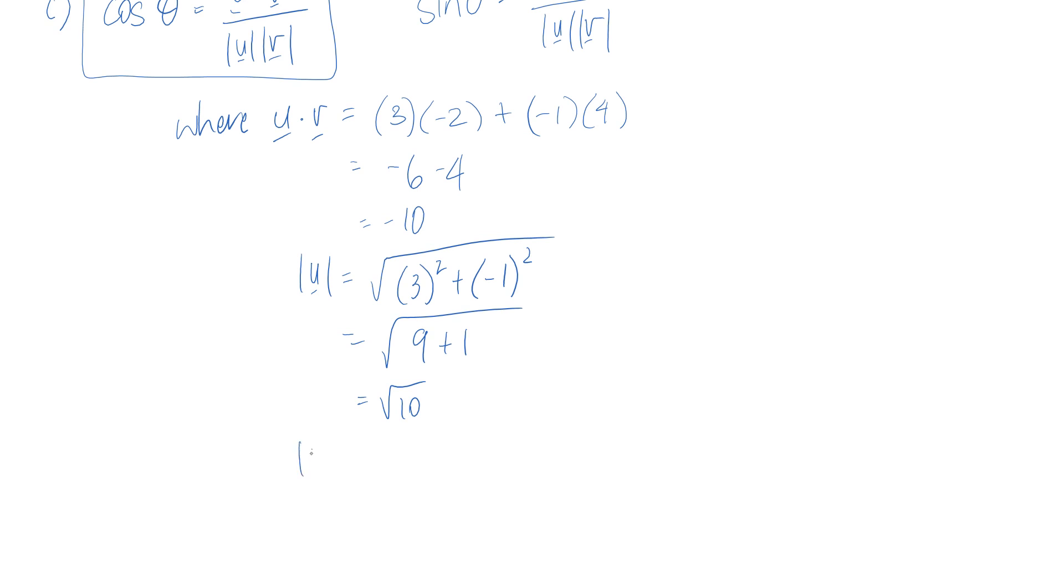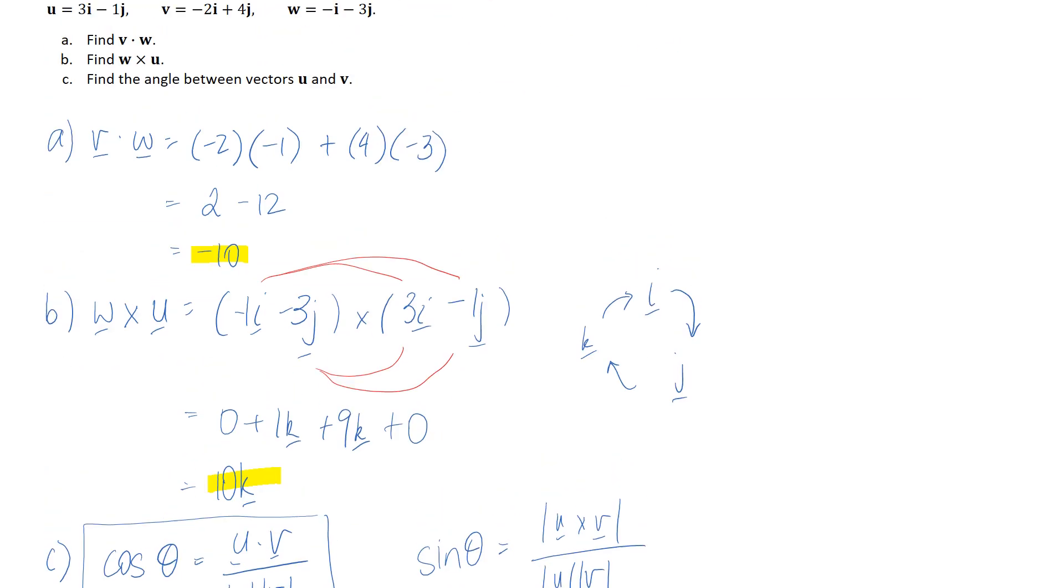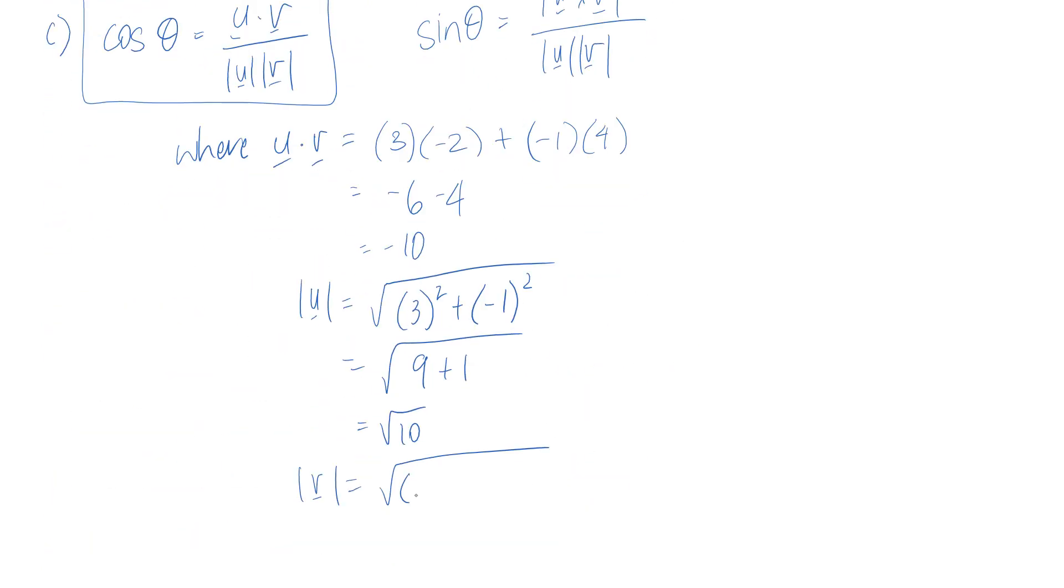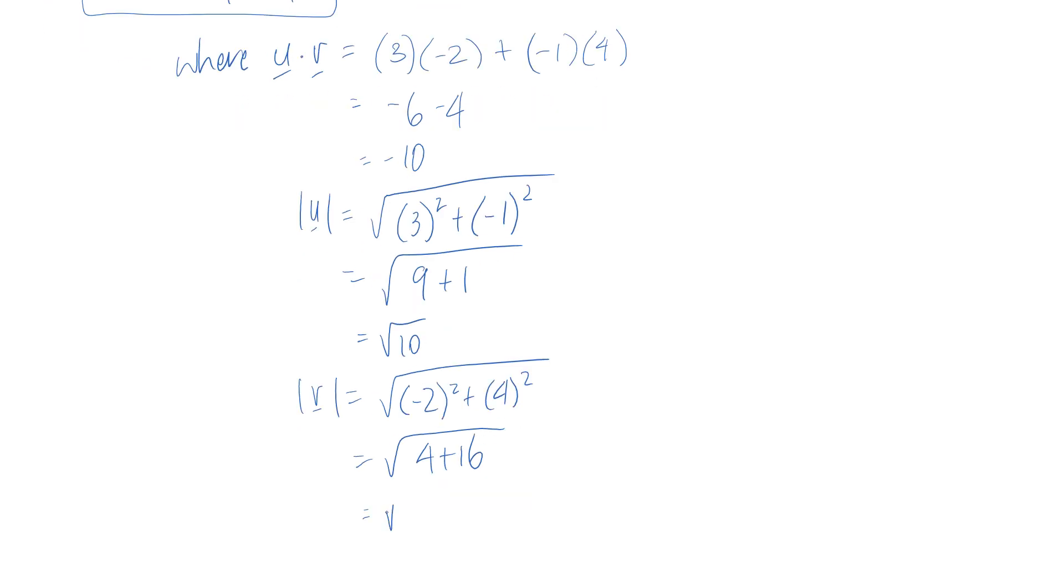And if we do the same thing for v going back up our components were negative 2 and 4. So if we simplify that we're going to get 4 plus 16 which is the square root of 20.